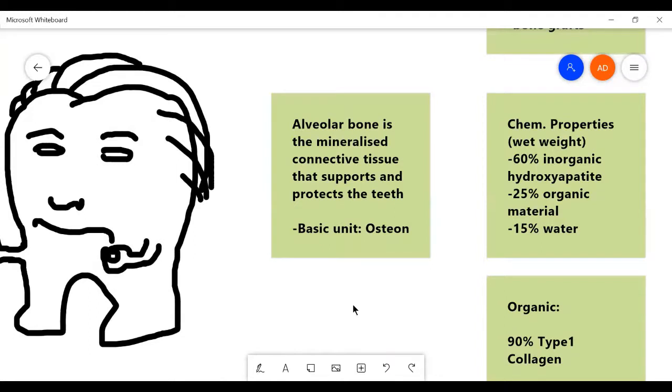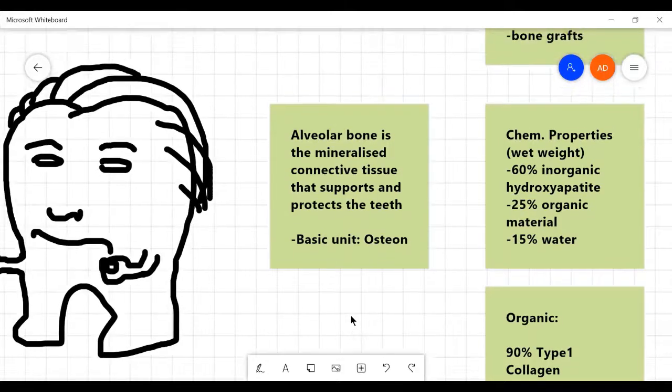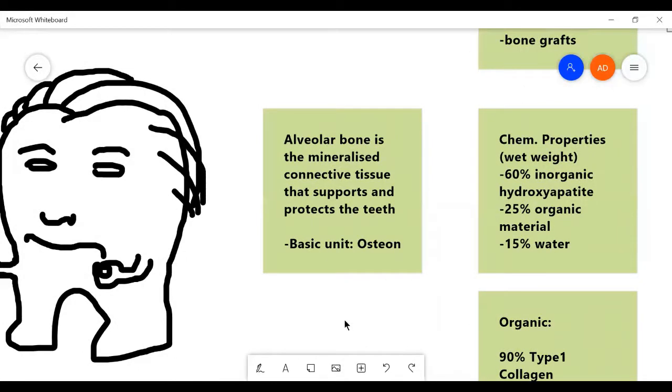I'm going to tell you that alveolar bone is a mineralized connective tissue that supports and protects teeth. It is part of the supporting structures of tooth that hold it in place. Its basic unit is an osteon.